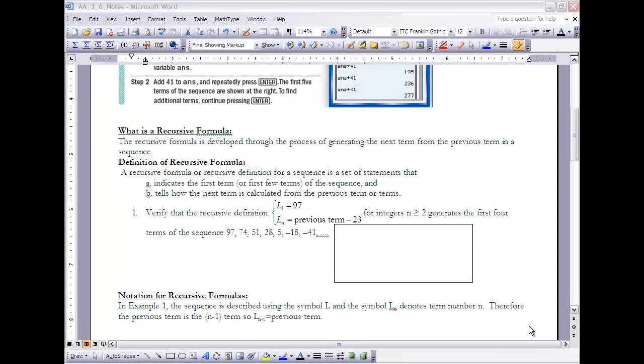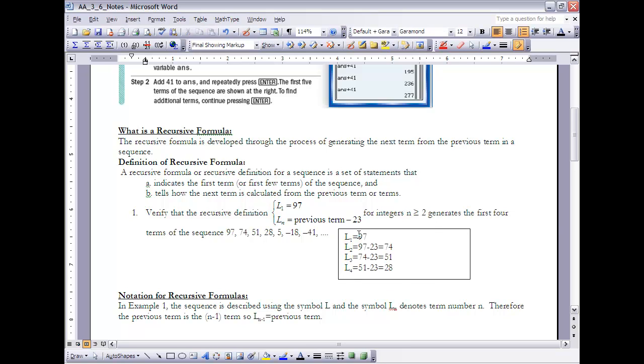So let's take a look at Example 1. It says verify that the recursive definition L sub 1, or the first term, is equal to 97, and L sub n—in other words, all other terms—we're going to take the previous term minus 23 for integers n greater than or equal to 2, generates the first four terms of the sequence 97, 74, 51, 28, etc. So let's just take a look at how that would work.